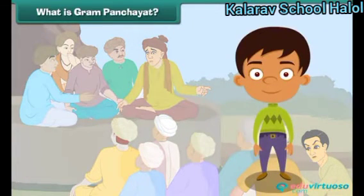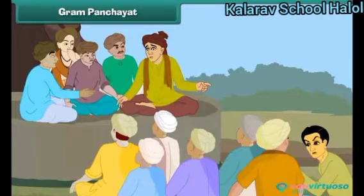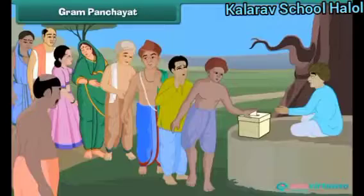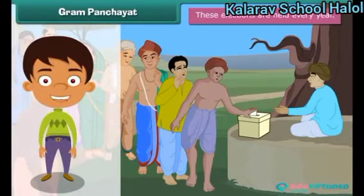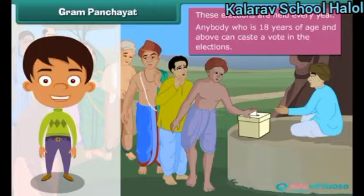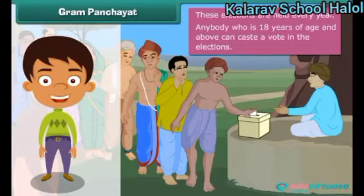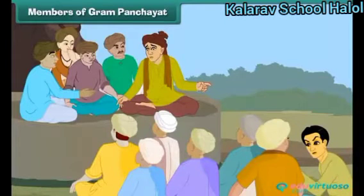A gram panchayat is the local government of a village. It is formed by members elected by the villagers in the gram panchayat elections. These elections are held every five years. Anybody who is 18 years of age and above can cast a vote in the elections.